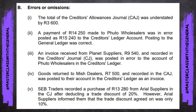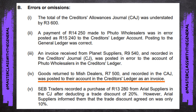Number four: goods returned to Mesh Traders for R7,500 were recorded correctly in the creditors allowances journal (CAJ). Because it was correct in the CAJ, it would have been posted correctly to the creditors control account in the general ledger — so there is no error there. The problem is that when it was posted to their account in the creditors ledger, it was posted as an invoice instead of a return.